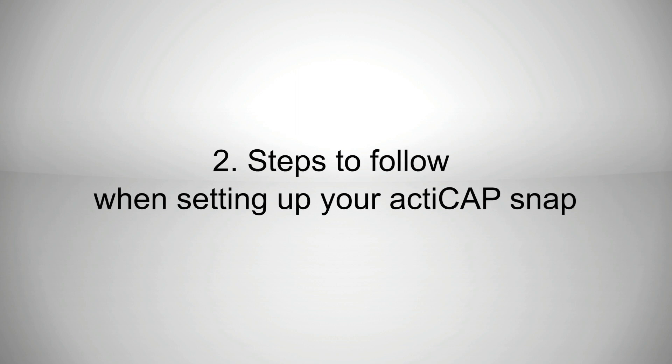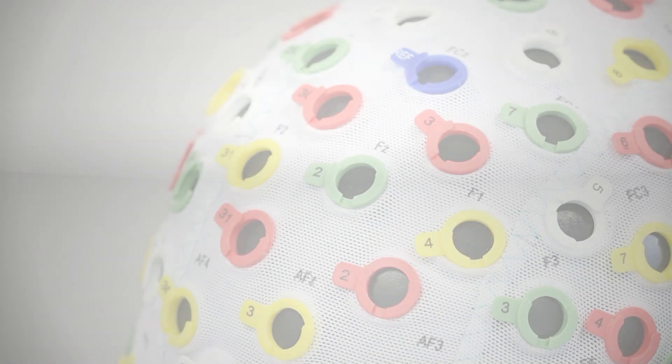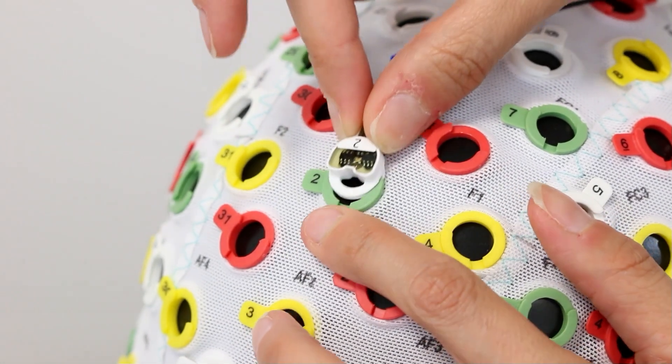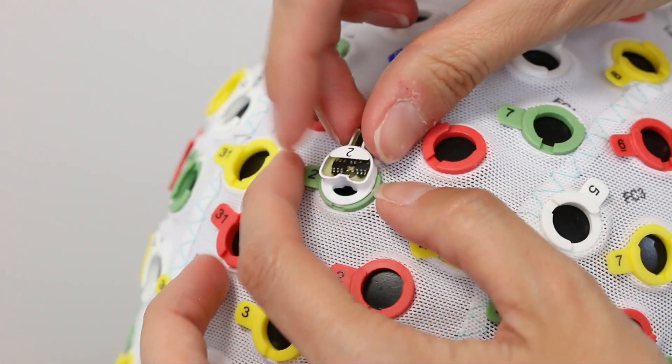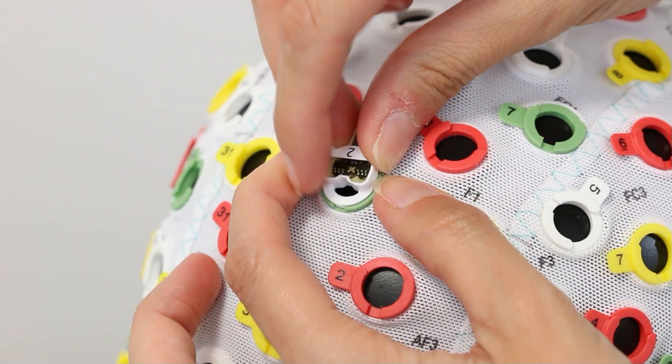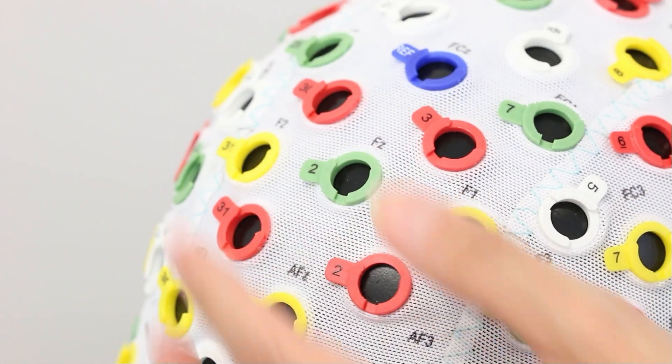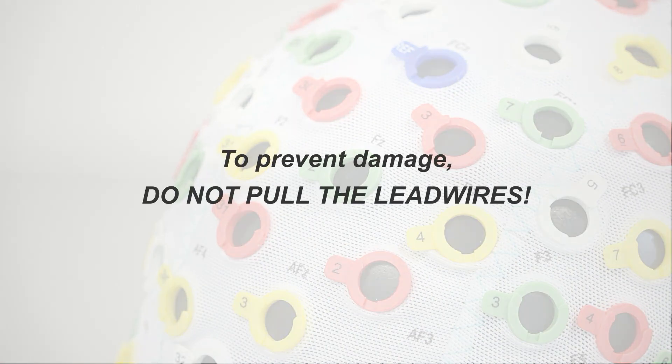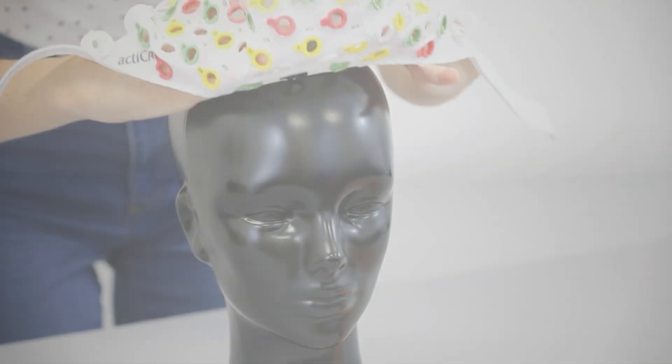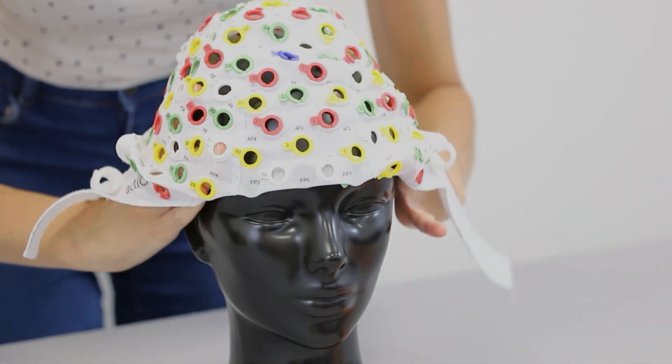Let's now walk through the steps we usually follow to set up an ActiCap snap cap in a nice and neat way. Remember to always hold the electrodes from the housing when inserting or removing them from the holders. Also, make sure you do not pull the lead wires to prevent damage. First of all, place the ActiCap snap cap on a model head.